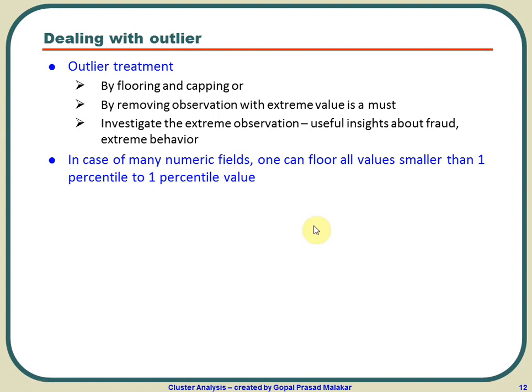In case you have many numeric variables, maybe 300 variables, and you don't have time to go through each one, you can floor any value smaller than the 1st percentile to the 1st percentile value. For example, if the 1st percentile value of x is -320, then if x is less than -320, set x equal to -320.